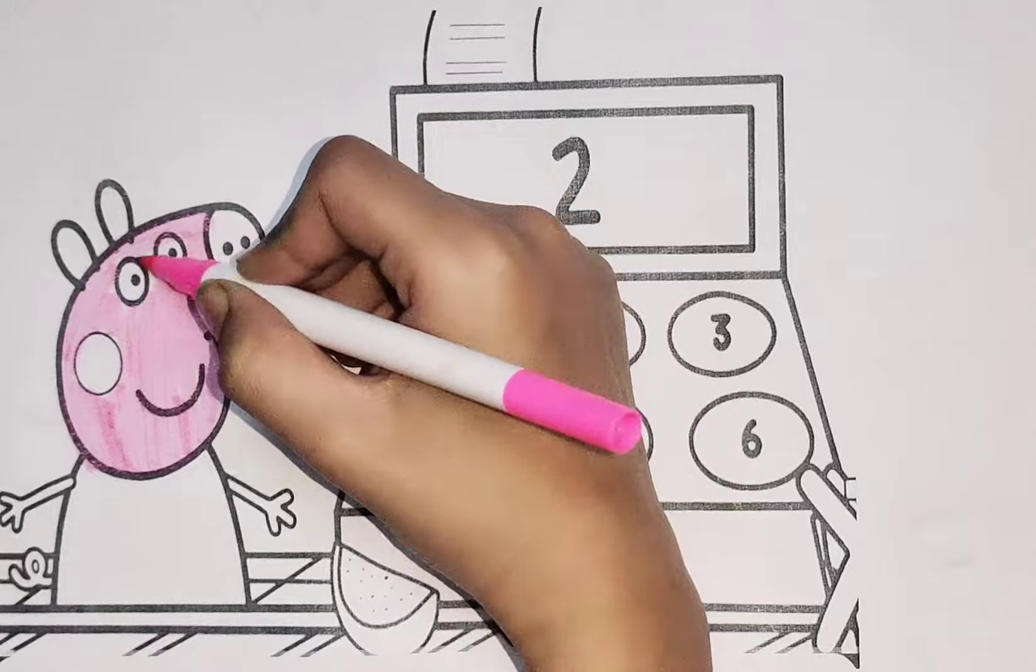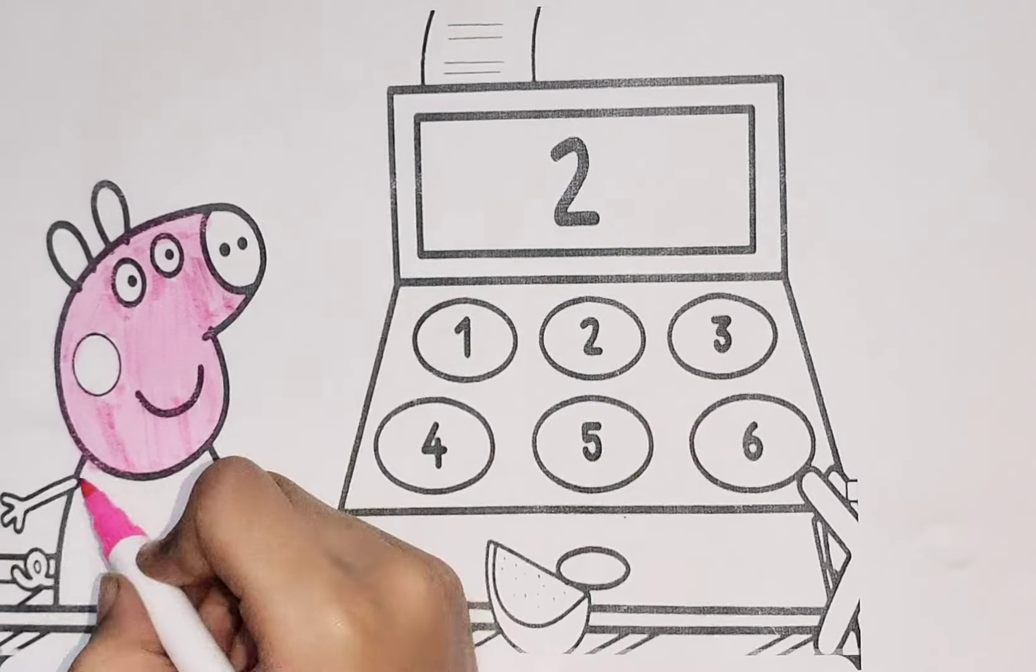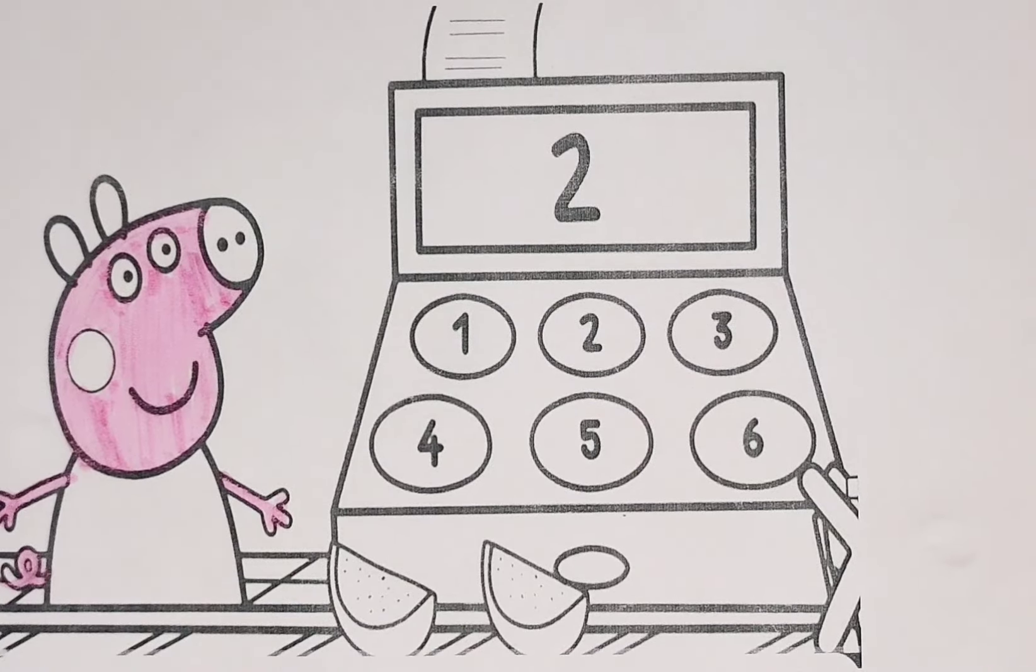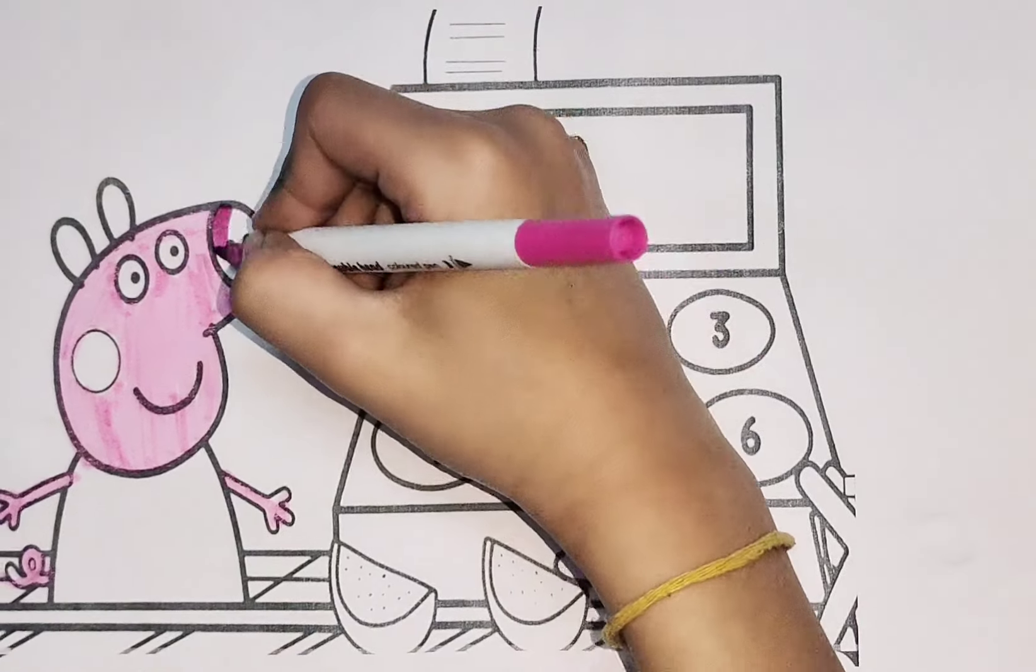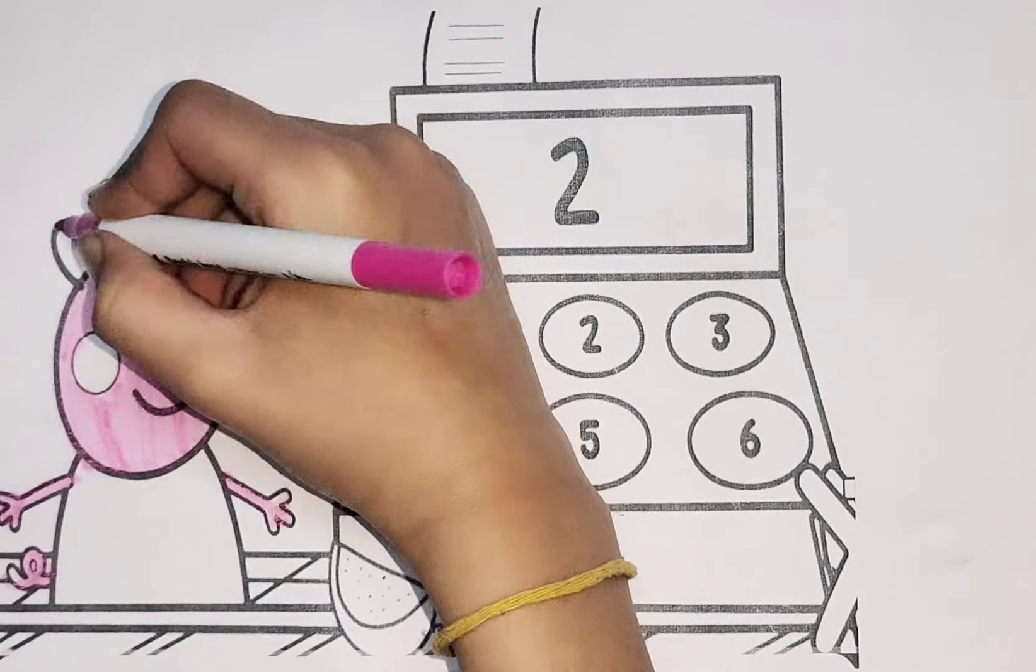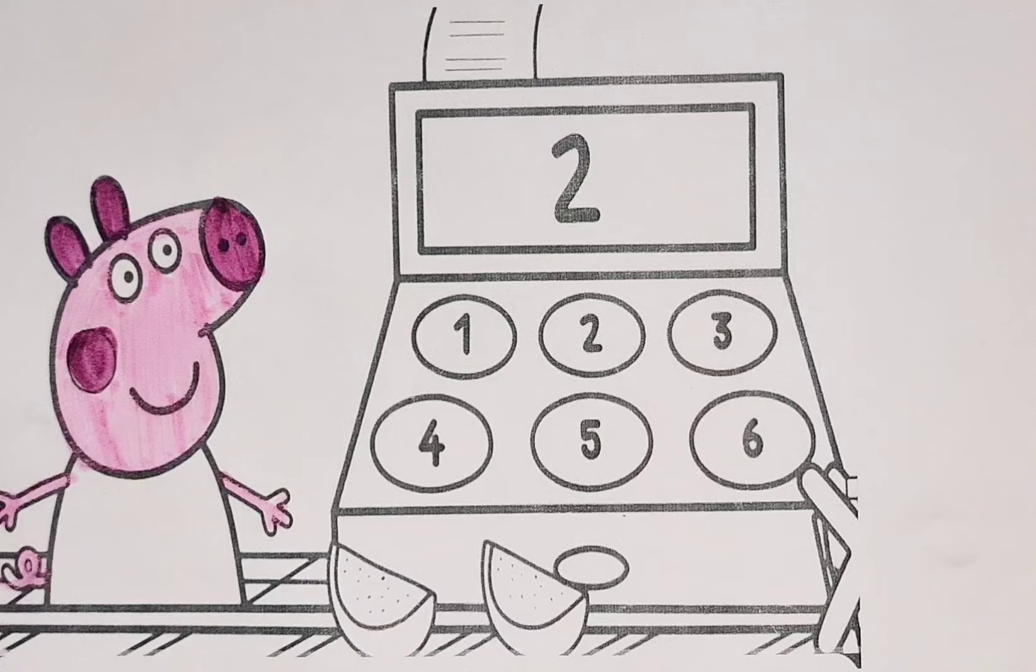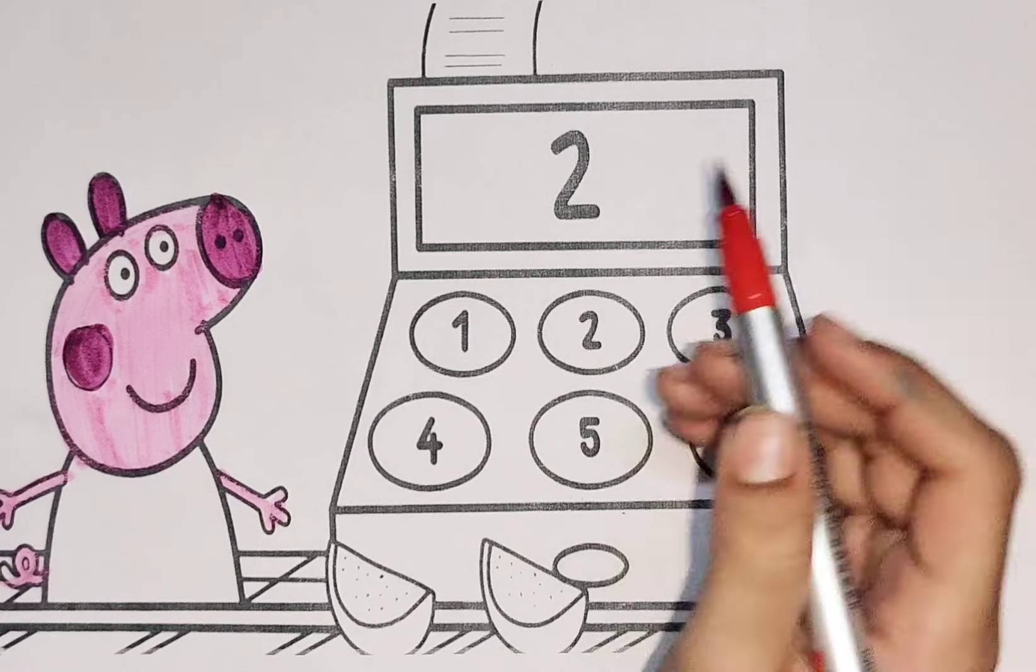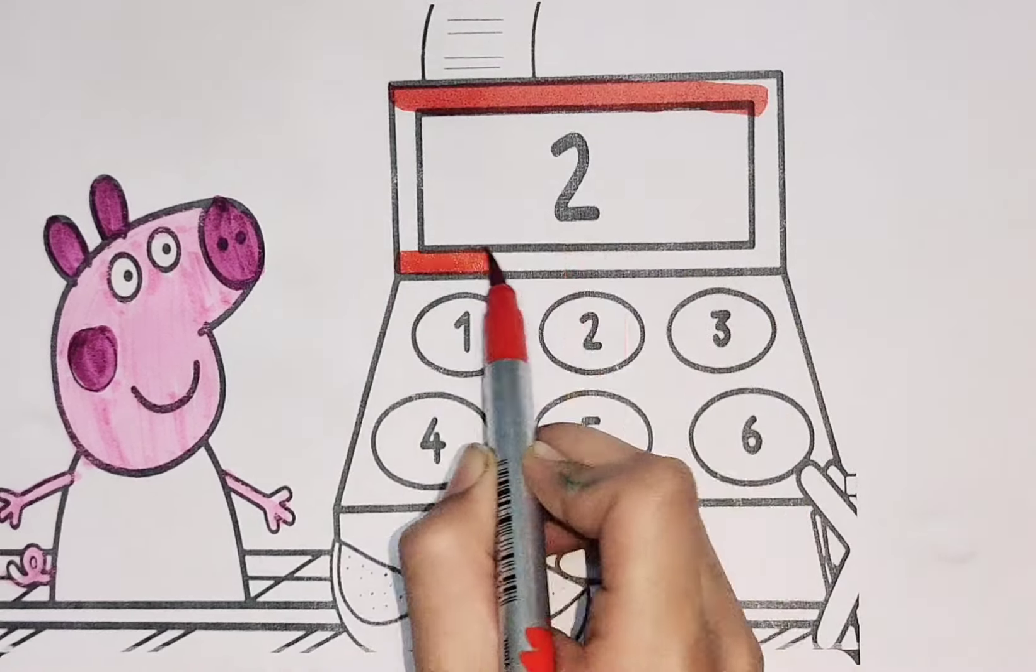Hush, little baby, don't say a word. Mama's gonna buy you a mockingbird. And if that mockingbird don't sing, Mama's gonna buy you a diamond ring.